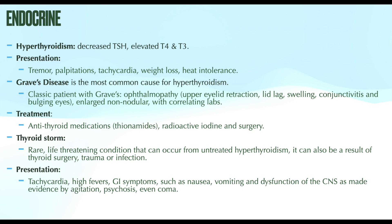Confirmation of Graves disease is done with antibody testing — thyrotropin receptor antibodies and thyroid peroxidase antibodies. Another important diagnostic test is the 24-hour radioactive iodine uptake. Iodine is needed for thyroid hormone production and must be obtained through diet. The patient ingests radioactive iodine and the amount of radioactivity in the thyroid gland is measured; results help determine the cause of hyperthyroidism. Other causes include thyroiditis and iatrogenic causes.